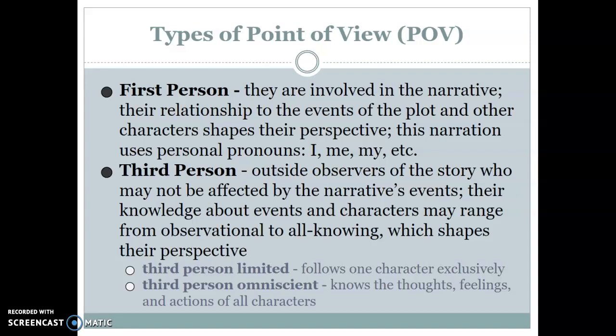Third person, however, is an outside observer — someone not necessarily a character in the story and not affected by the narrative's events. Their knowledge about events and characters might range from just observational to all-knowing and godlike. There are two types of third person: third person limited, which typically follows one character exclusively and is not in the minds and thoughts of others; and third person omniscient, where the narrator knows the thoughts, feelings, and actions of pretty much every character — very godlike in a sense.